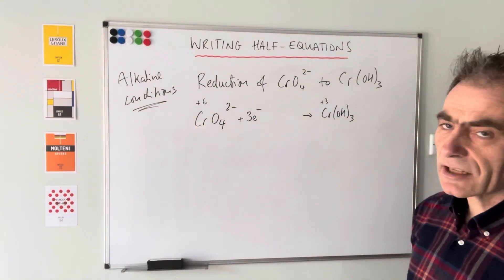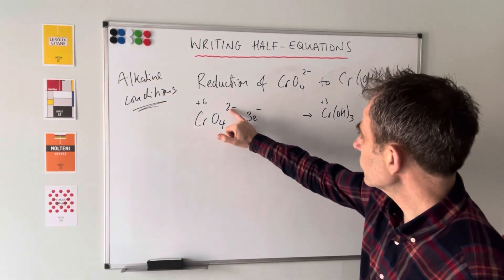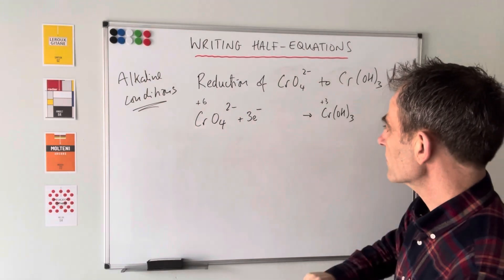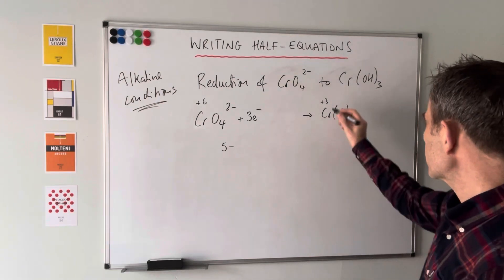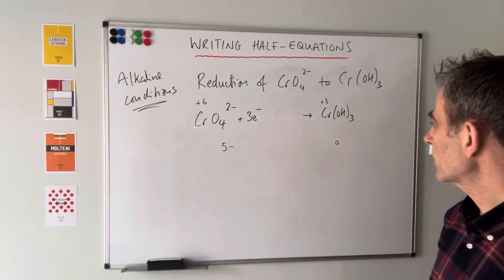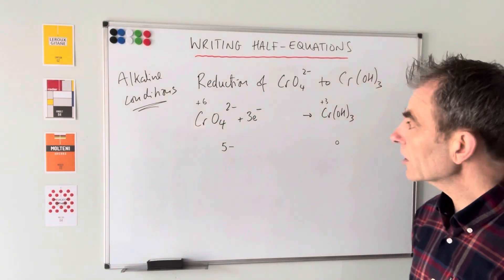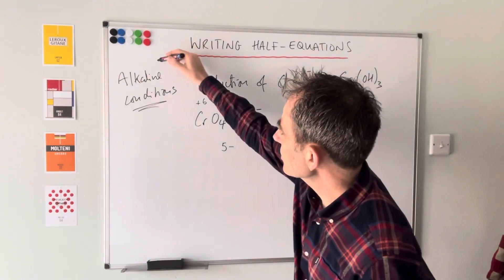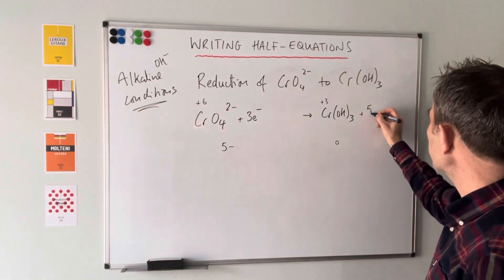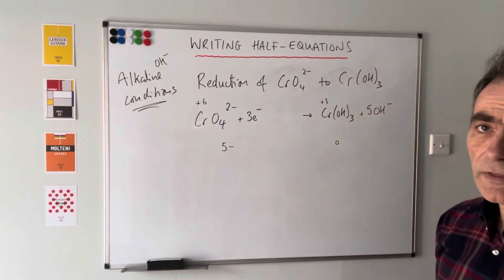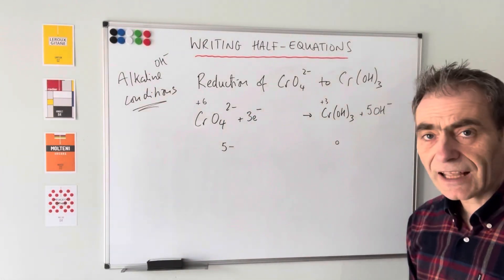Step two: sort the charge out left and right so they're equal. Total charge on the left is two minus plus three minus, which is five minus. Total charge on the right is zero - Cr(OH)3 is a neutral substance. So we need the left to be zero as well, but because it's in alkaline conditions we use hydroxide ions. We need five hydroxide ions on the right, giving us five minus on both sides.